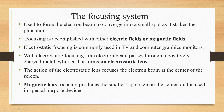In electrostatic focusing, a positively charged metal cylinder forms an electrostatic lens that focuses the electron beam in the center of the screen. If we use a magnetic field, we use a magnetic lens.